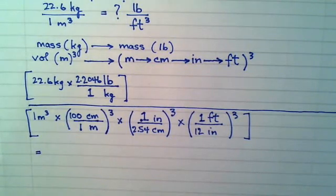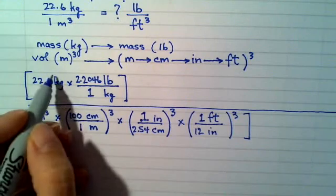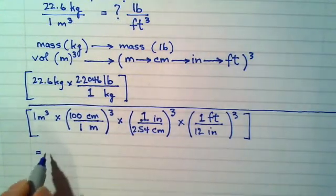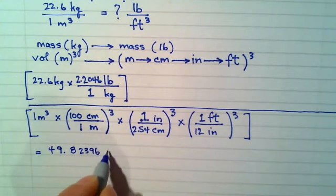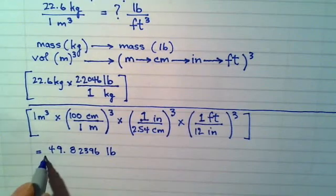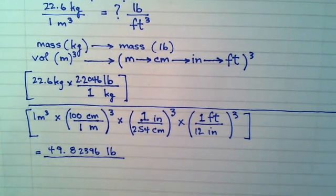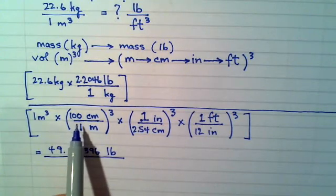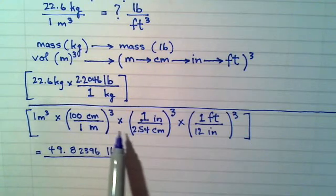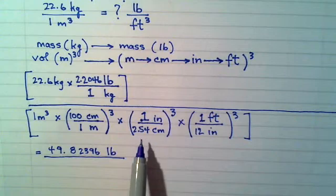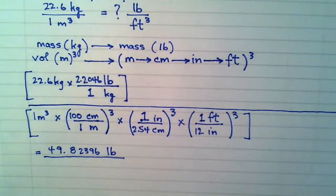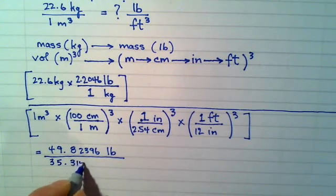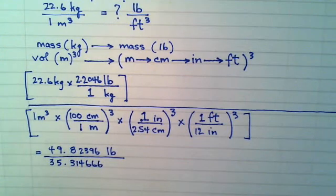Let's do the top first again, one step at a time, top then bottom. Let's multiply through the top. I know that kilograms will go out with kilograms and I'll be left with pounds. Let's put down the number that the calculator will return with all its digits: 49.82396, and my unit will be pounds. That is all over, now here's what you want to put into your calculator. I'm just going to skip over the ones because that's pointless. So you're going to put in your calculator now 100³ divided by 2.54³ divided by 12³ and we'll get an answer of hopefully 35.314666.